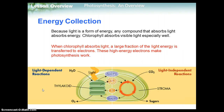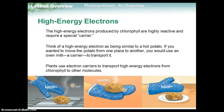Because light is a form of energy, any compound that absorbs light absorbs energy. Chlorophyll absorbs visible light especially well. When chlorophyll absorbs light, a large fraction of the light energy is transferred to electrons. These high-energy electrons make photosynthesis work.